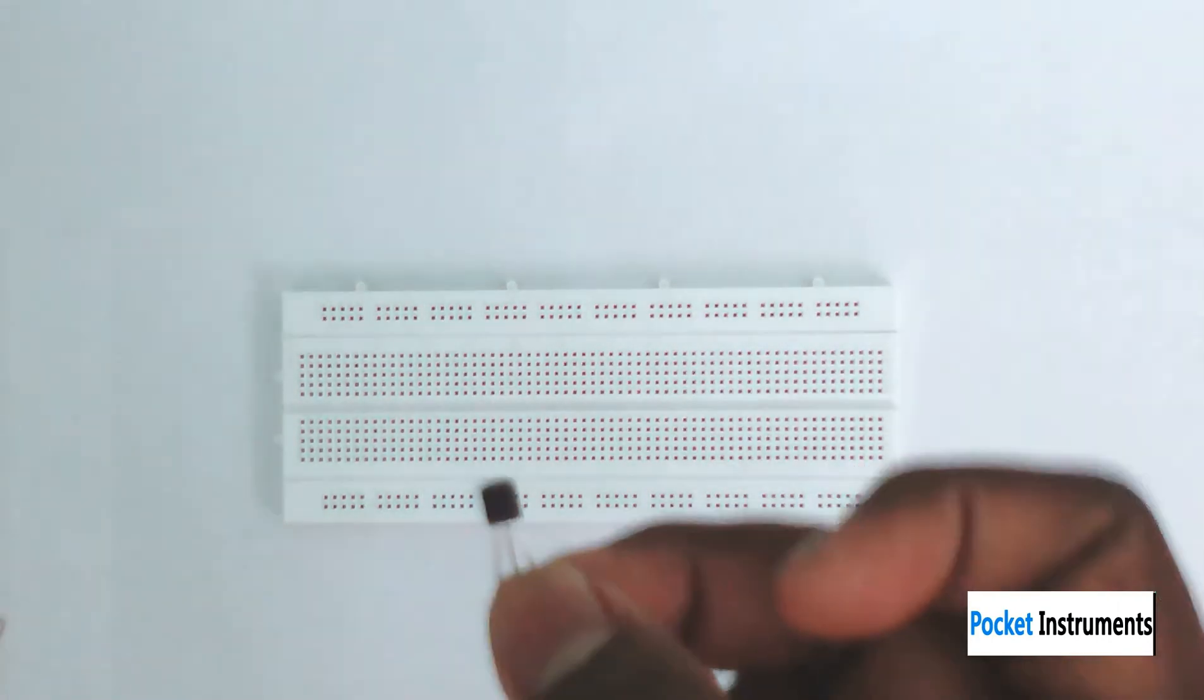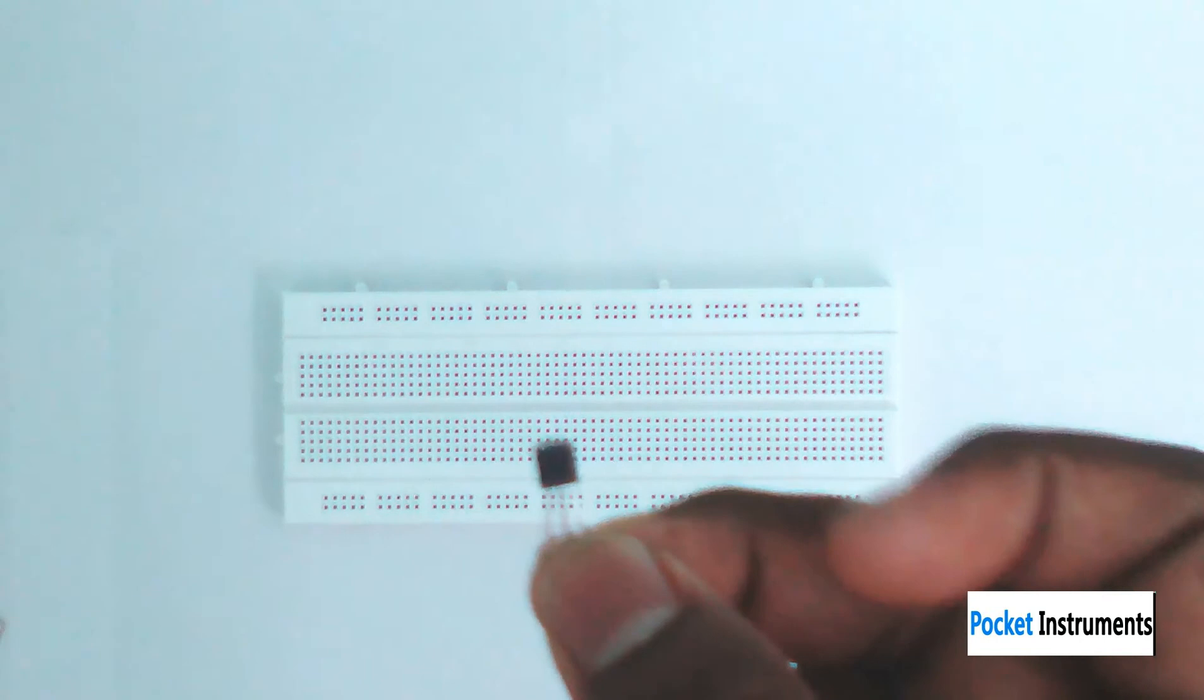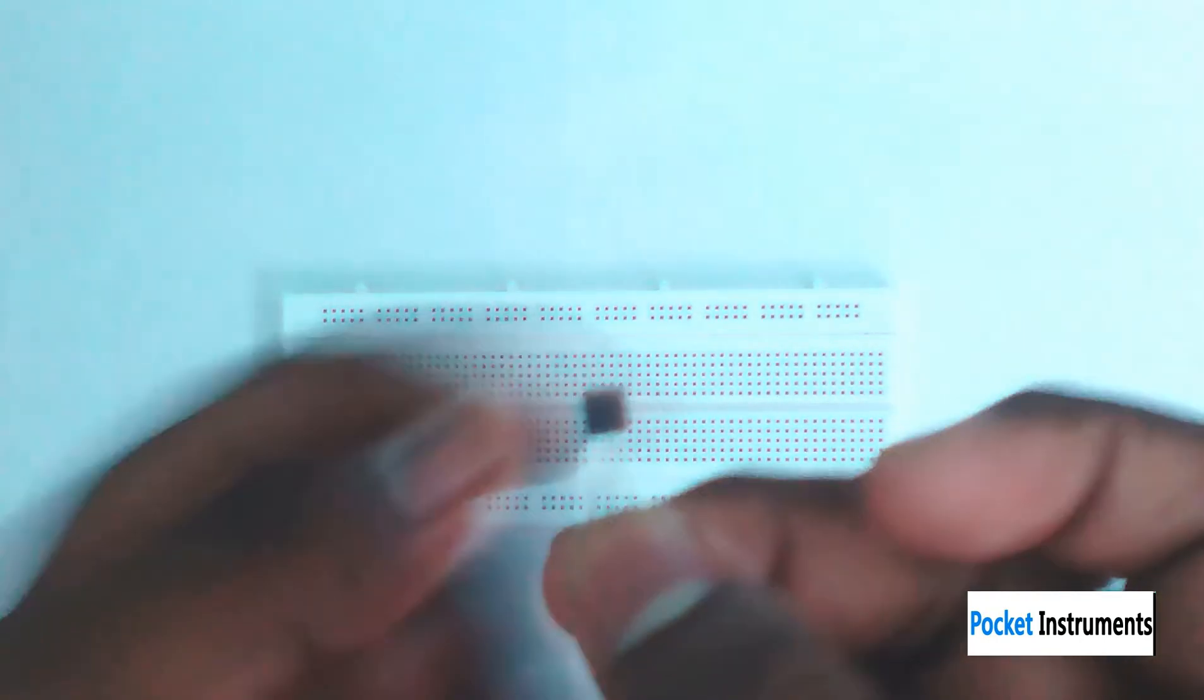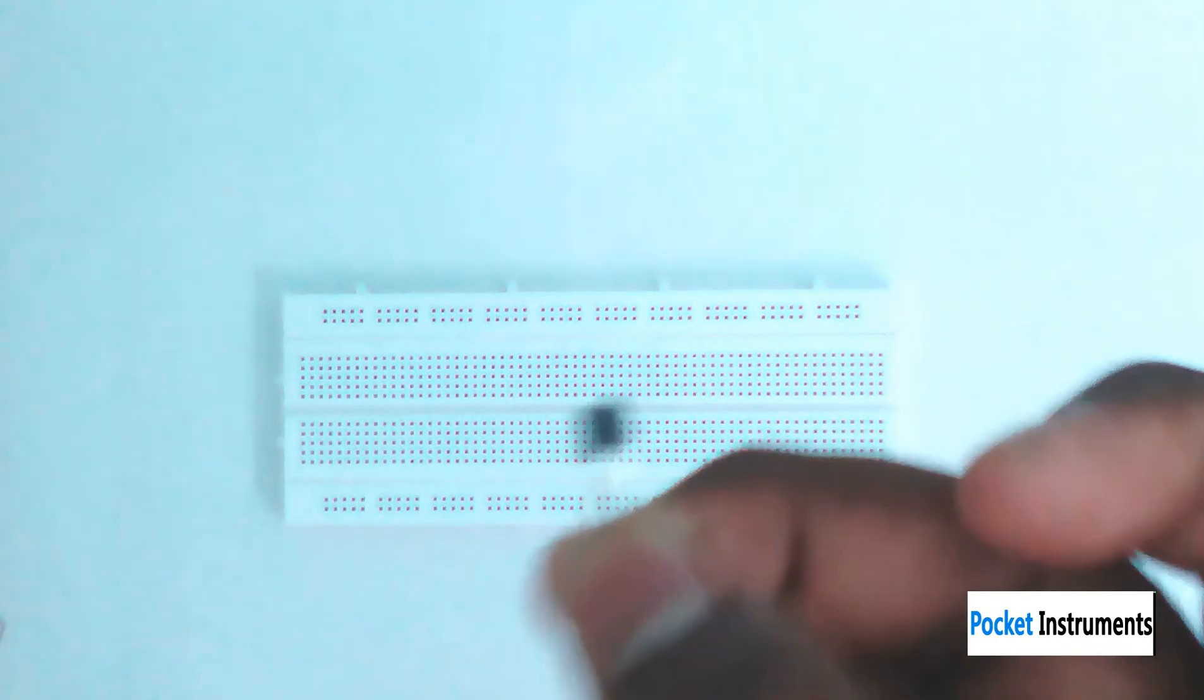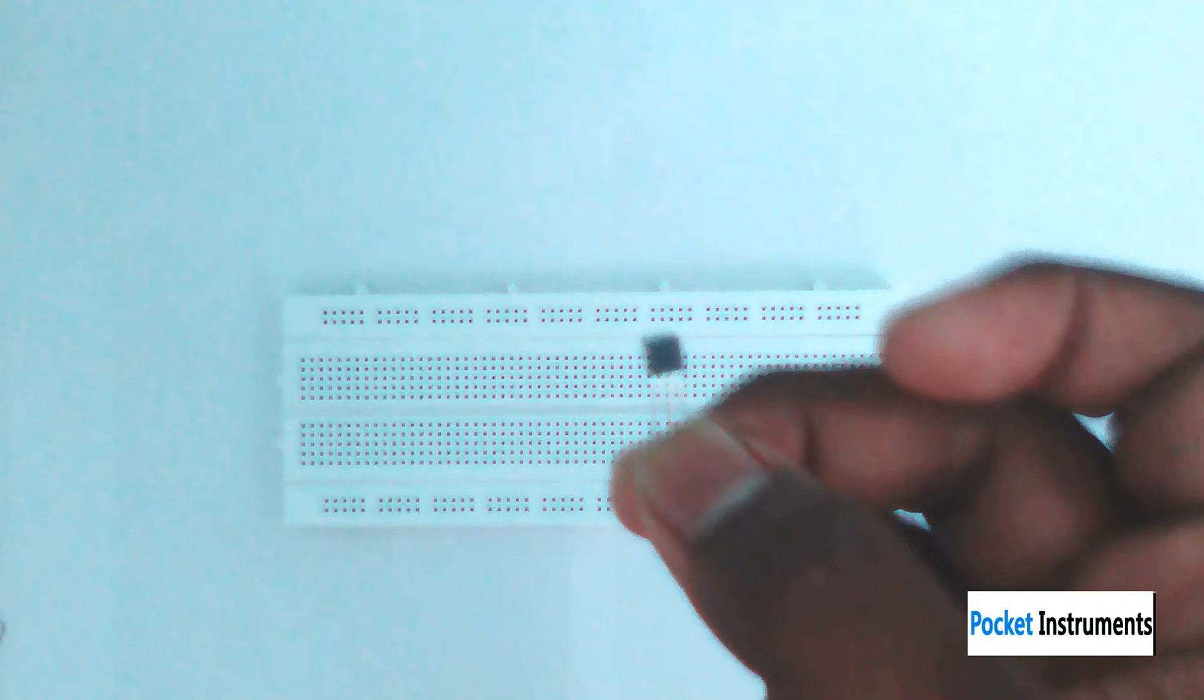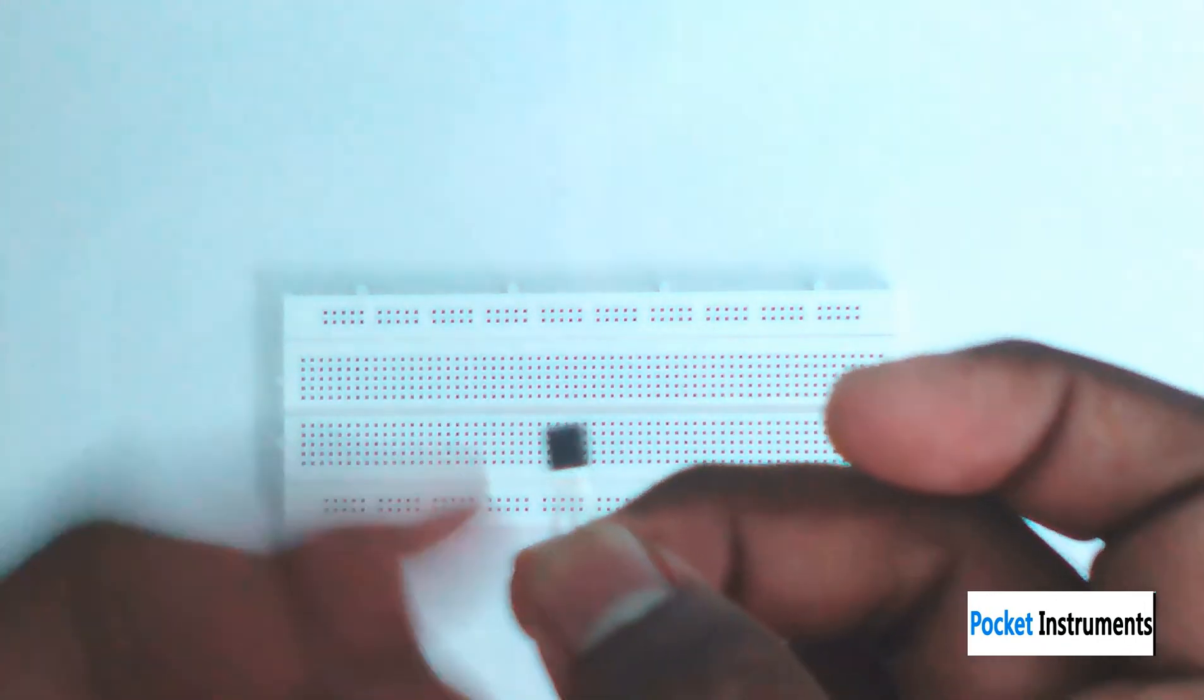So PNP Transistor, we can switch to the PNP Transistor. This is BC557, this is a PNP Transistor. We already use NPN Transistor, when we switch to the PNP Transistor.